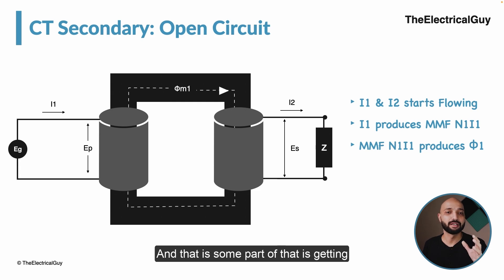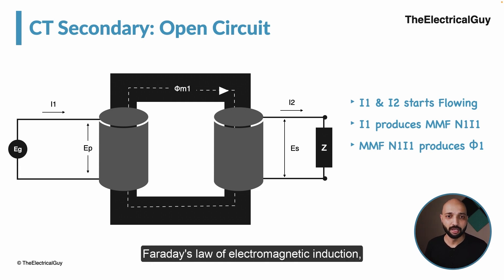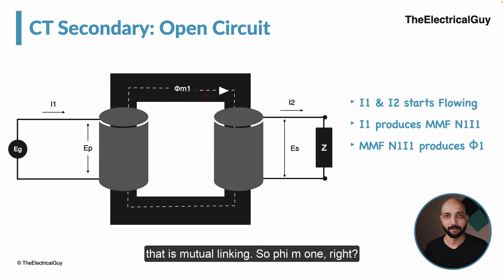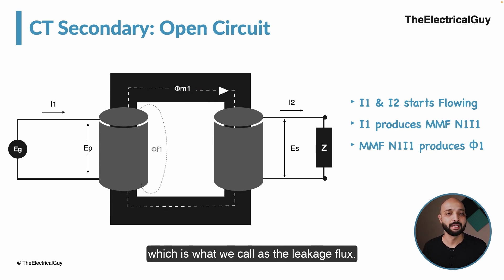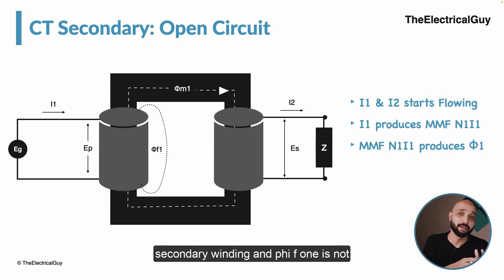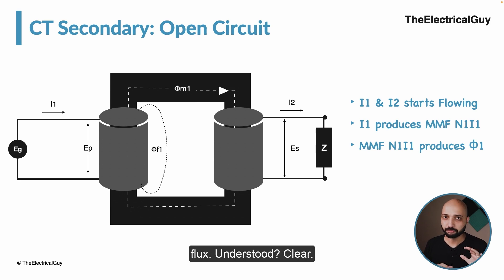When there is a magnetomotive force, there will be flux, given by phi_1, produced by current i1. Some part of that flux gets linked with the secondary of the transformer — that is phi_m1, where 'm' stands for mutual linking. Some part of the flux does not get linked with the secondary winding; that is what we call leakage flux, given by phi_f1. So phi_1 has two portions: phi_m1 and phi_f1.